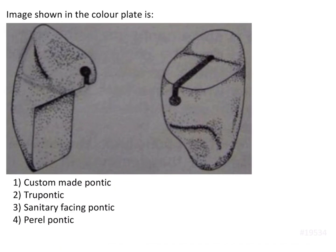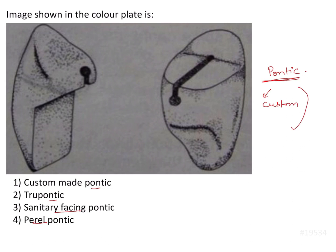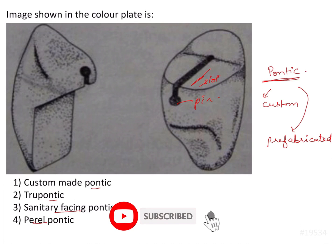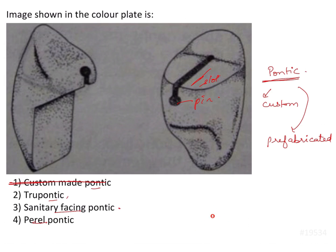The image shown in the plate — a color plate — shows a custom-made pontic, true pontic, sanitary facing pontic, or barrel pontic. A pontic is that part of the FPD that replaces the missing tooth. It could be either custom-made or prefabricated. This one is already fabricated — it has a slot and a pin — so custom-made is out of option, leaving us with true pontic, sanitary facing, and barrel pontic.